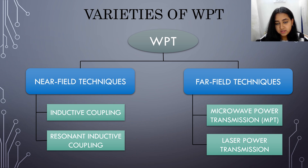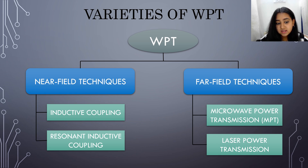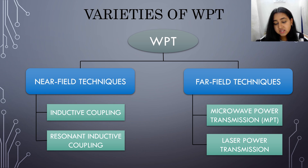Varieties of WPT: Wireless power transmission has two kinds — near field techniques and far field techniques. Each has two sub-types: near field includes inductive coupling and resonant inductive coupling, while far field includes microwave power transmission (MPT) and laser power transmission.